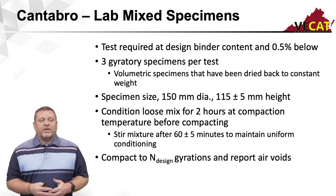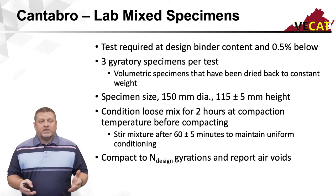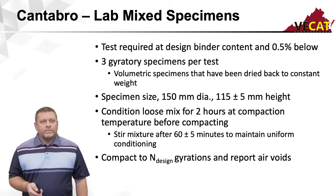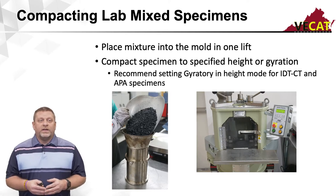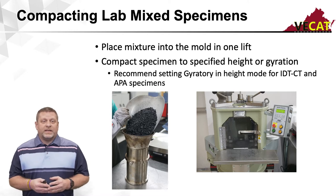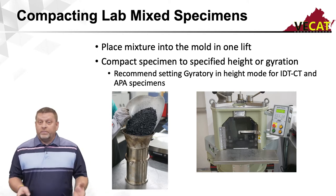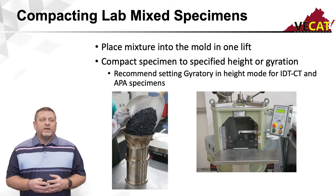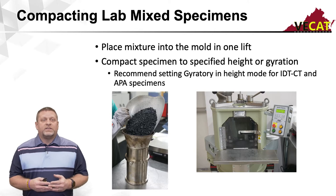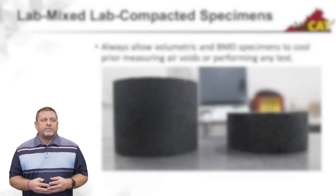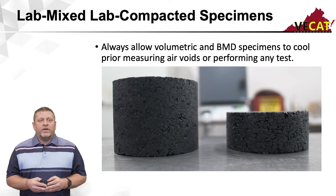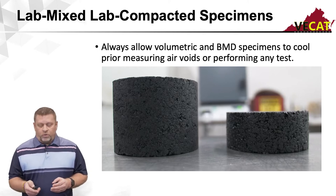Condition the loose mix for two hours at compaction temperature before compacting, and don't forget to stir at the one-hour interval. When compacting to end gyrations in design, that is currently 50 gyrations in Virginia. When compacting your lab mix specimens, place the mixture in the mold in one lift — we don't want to segregate the mix after all this work, which would impact void content. We recommend you change your gyratory to height mode and compact to a specified height. Always allow the volumetric and BMD specimens to cool prior to measuring air voids or performing any test.